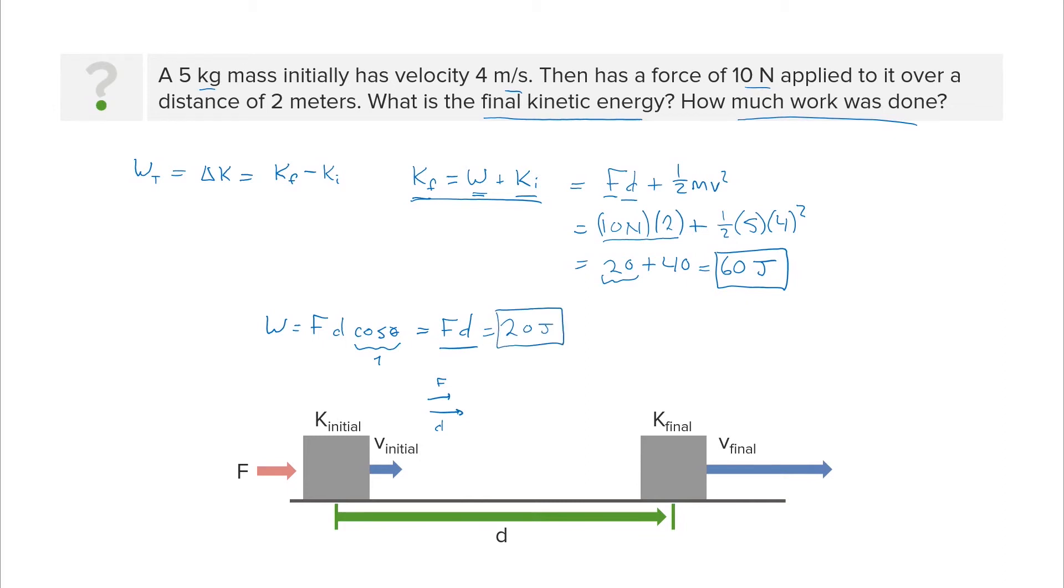This force times the distance is 20 joules of work. So by adding 20 joules of work to our object using work in the same direction, we've added 20 joules of energy to the object's kinetic energy, and it has far more kinetic energy than it originally had.